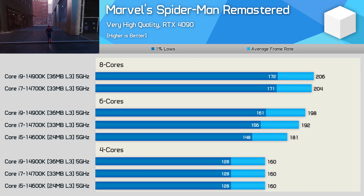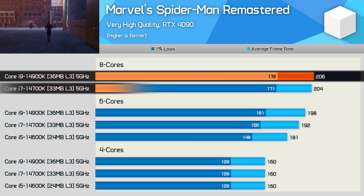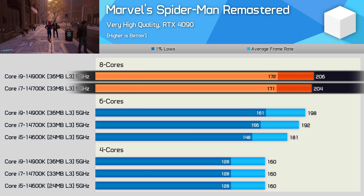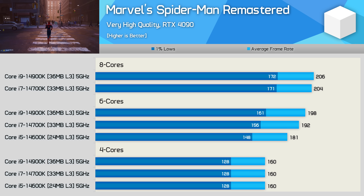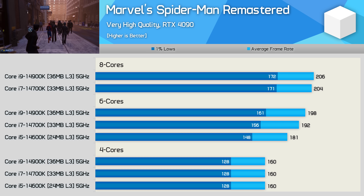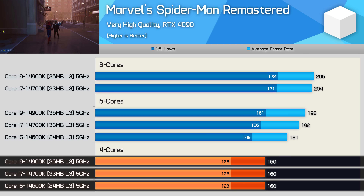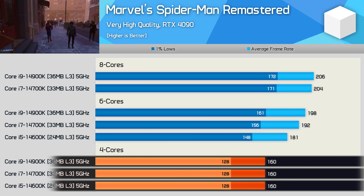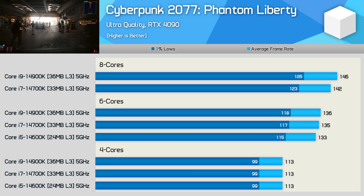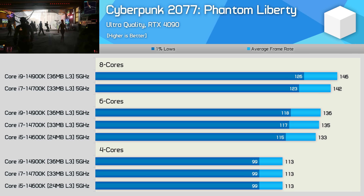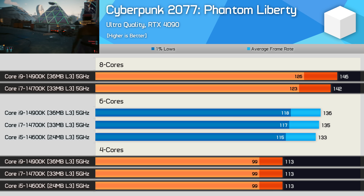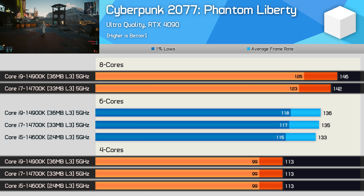The Spider-Man Remastered results are interesting — with eight active cores the 14900K and 14700K deliver virtually identical results at 5 GHz, again pointing to clock frequency as the primary bottleneck. With six cores, cache becomes slightly more important, though the 14700K was only 3% slower than the 14900K. Cyberpunk 2077 Phantom Liberty sees very little difference between eight core configurations, only a 7% reduction with six cores active, and a 22% reduction going down to four cores. At 5 GHz, cache capacity plays a very small role.